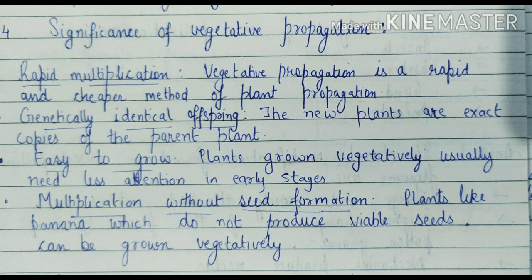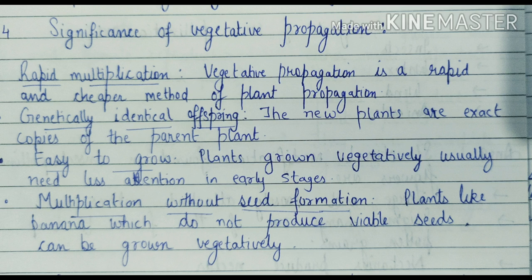As we have studied both the natural and artificial methods of vegetative propagation, let us also learn the significance of vegetative propagation. Number one is rapid multiplication — plants developed through this method grow rapidly. Second, the new plants developed are genetically identical offspring of the parent plant. Another advantage is that the plants can be grown very easily and do not need special attention in early stages. Additionally, plants that do not produce viable seeds, such as banana, can be grown vegetatively.